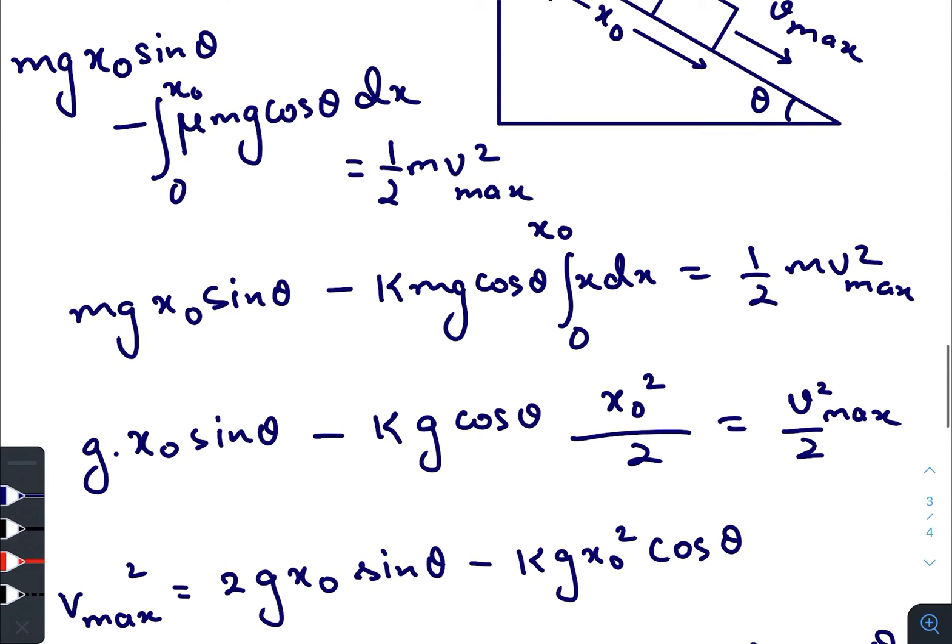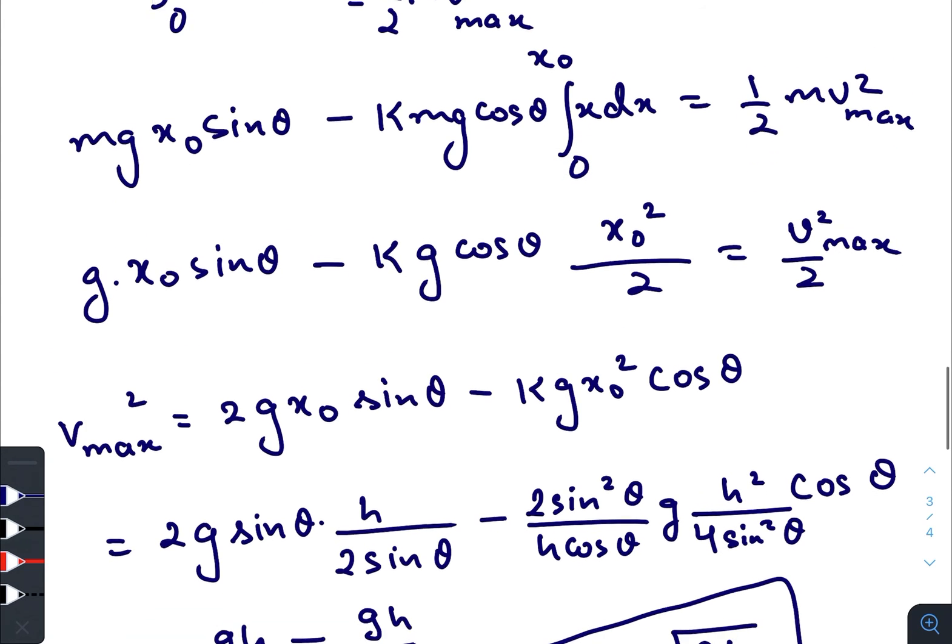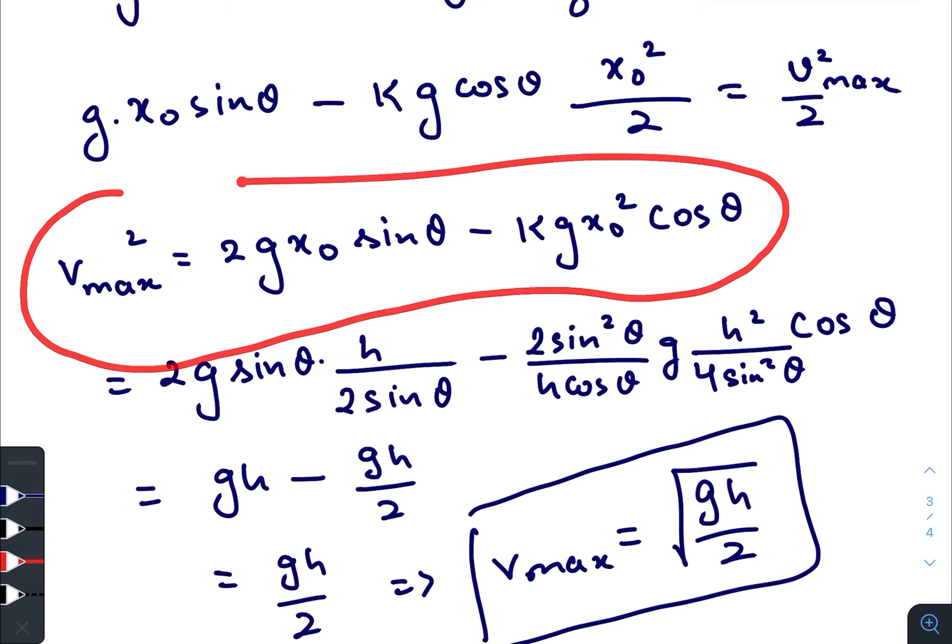So μ equals to kx here, integrating from zero to x₀, half m v_max squared. So m gets cancelled out, cutting off all the common values. So we finally get v_max equals to this term.